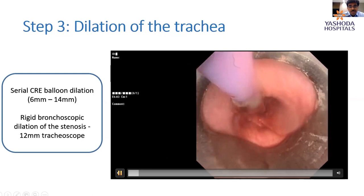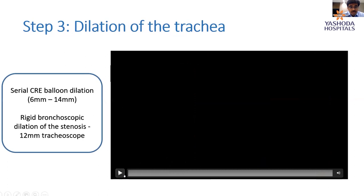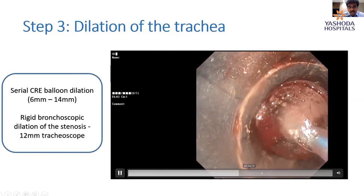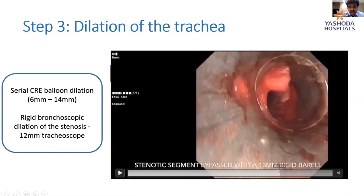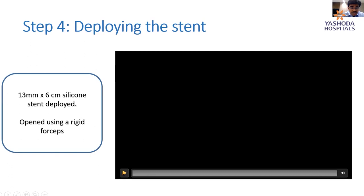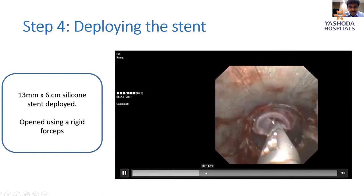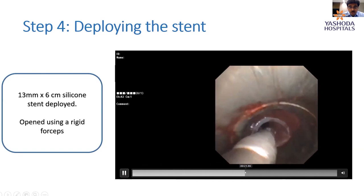Balloon dilation was performed and once adequately dilated, the rigid bronchoscope was passed across the stenotic segment into the distal trachea, confirming a significant lumen had been created. The last step was to deploy a stent. In this patient, we decided to deploy the stent at the first instance. A silicone stent was deployed and positioned across the stenotic segment, then opened up using forceps.